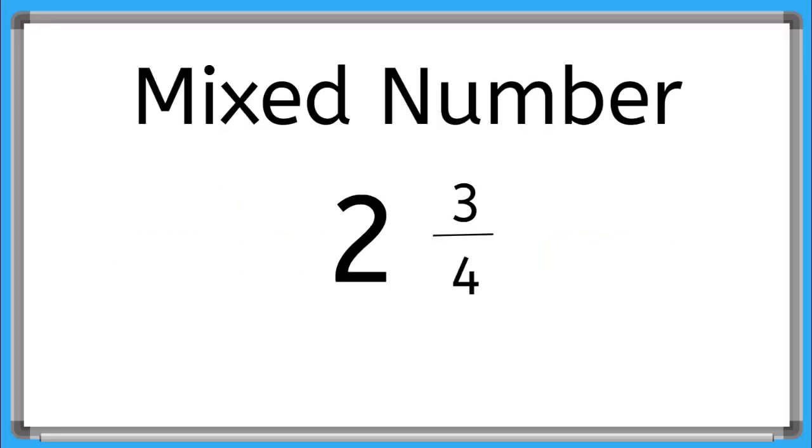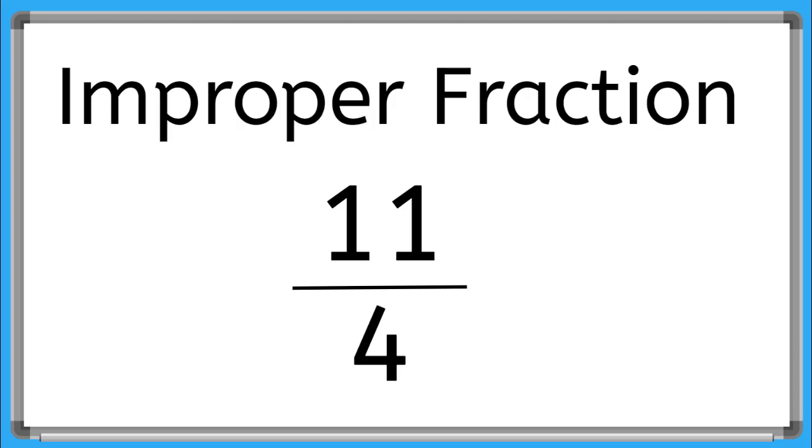Remember that a mixed number is a whole number and a fraction combined, and sometimes it's easier to work with mixed numbers if we rewrite them as improper fractions. An improper fraction is a fraction that is top-heavy or has a bigger number in the numerator than in the denominator.